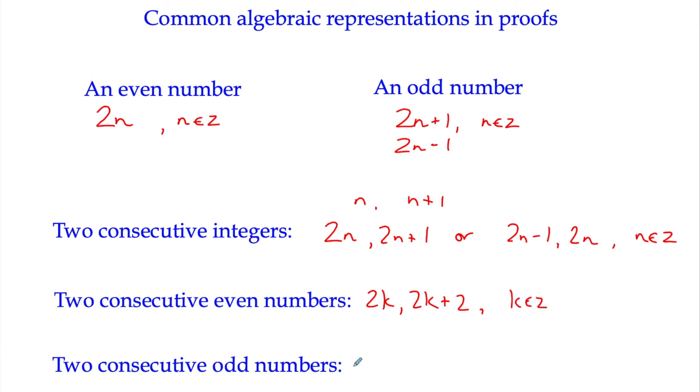And consecutive odd numbers, we could say that 2k minus 1 and 2k plus 1 are consecutive odd numbers, because there's always a gap of 2 between consecutive even and odd numbers. So that's the kind of language that we're going to be using in some of these direct proofs.